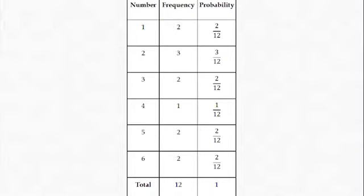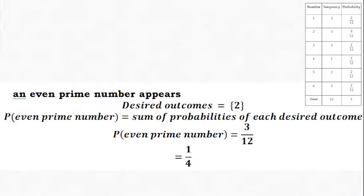Let's find the probability of an even prime number appearing. The desired outcome is 2 only, because it is the only even prime number in the outcomes. So, the probability of an even prime number is equal to 3 out of 12. But always remember to reduce your fractions. Therefore, the final answer is 1 out of 4.